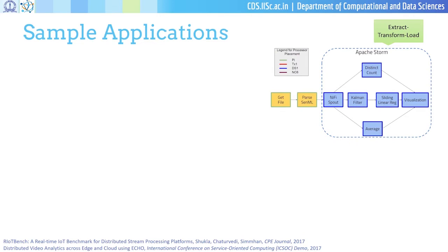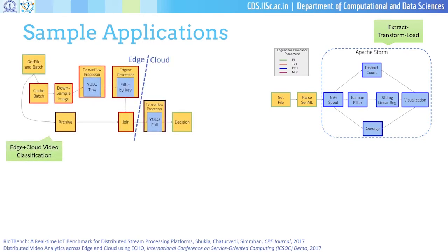Some applications we've gotten working on the Echo platform — all real applications from our smart city and smart campus projects. One is a classic ETL extract-transform-load pipeline: acquire data, store it in permanent storage, and retrieve it later. Previously we ran this using Apache Storm exclusively on the cloud. With Echo, you can do pre-processing like parsing and data transformation on edge devices and hand off to cloud only afterward. Another application is video analytics: streams of video data come in for classification, with low granularity classification done on the edge, and if something interesting emerges, it gets pushed to the cloud with a high-end GPU for more concrete classification — spending bandwidth only when necessary.